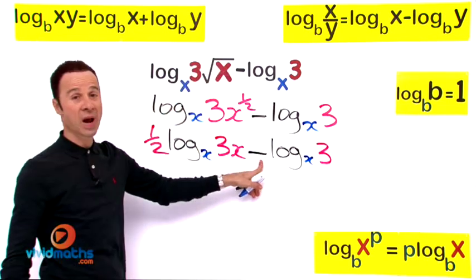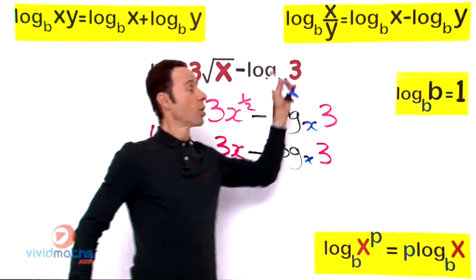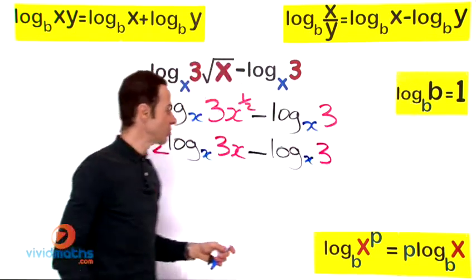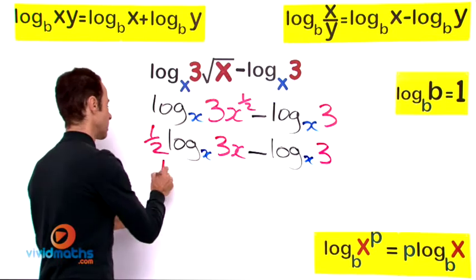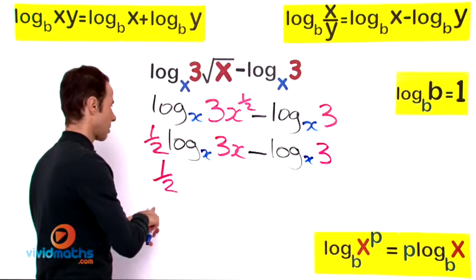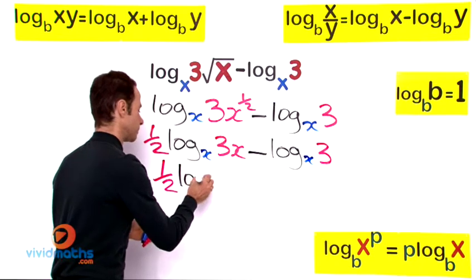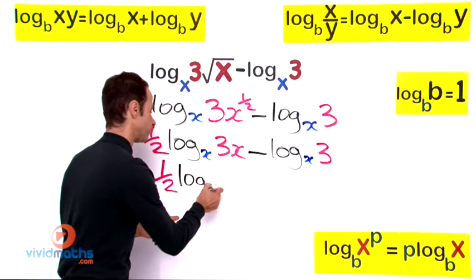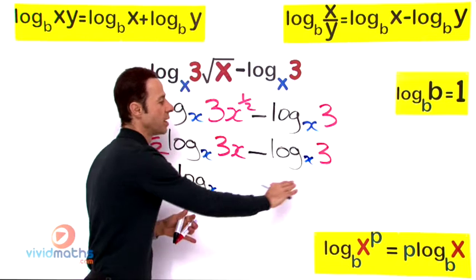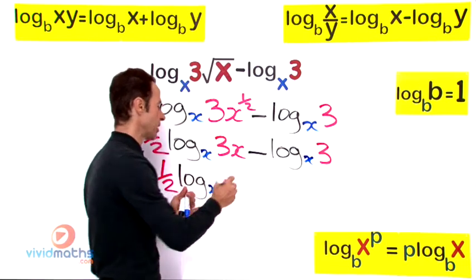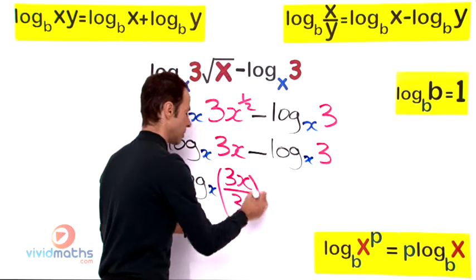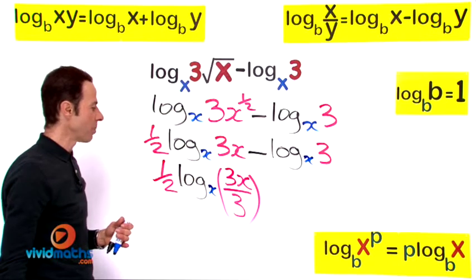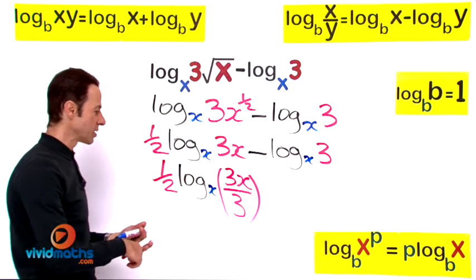Ok, we have that subtraction, we are going to use the log law across there. So this is going to end up becoming, we keep the 1/2 in the front, log base x of 3x divided by 3. Let us write that in like that. It is nice and compact now. Can we do any cancelling? Yes we can.